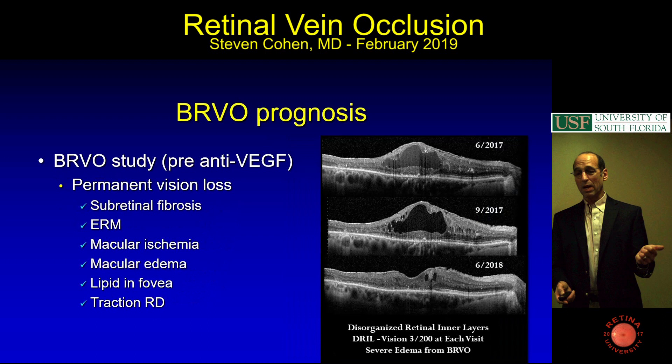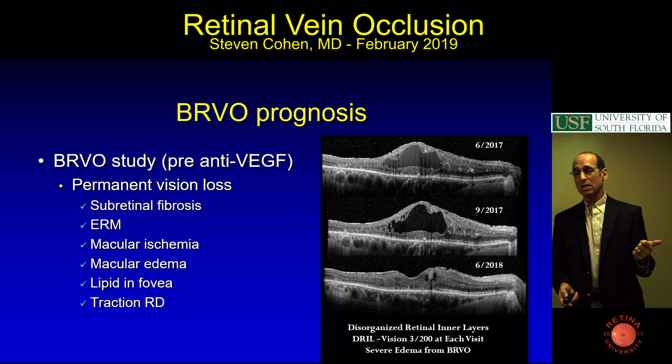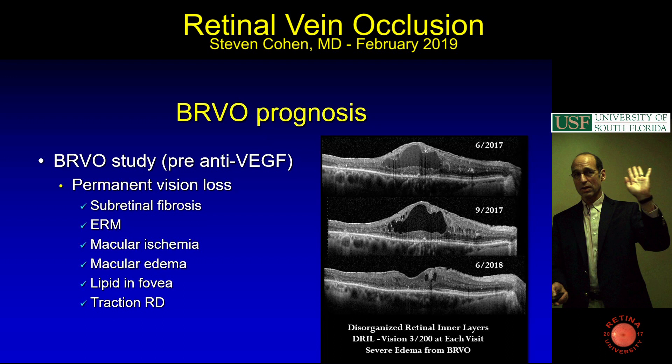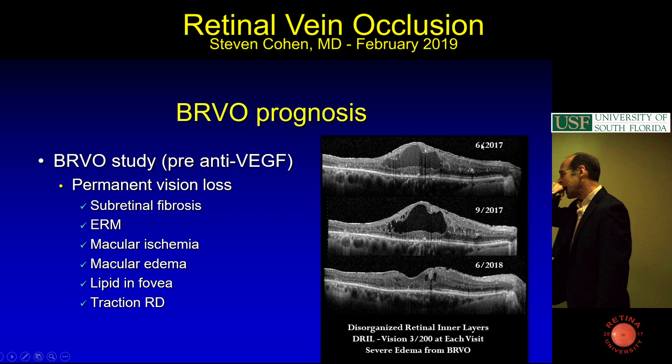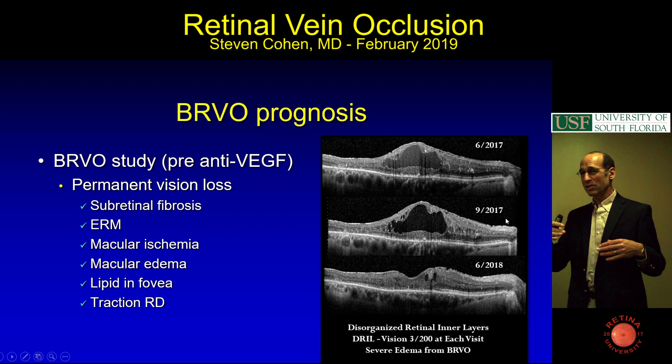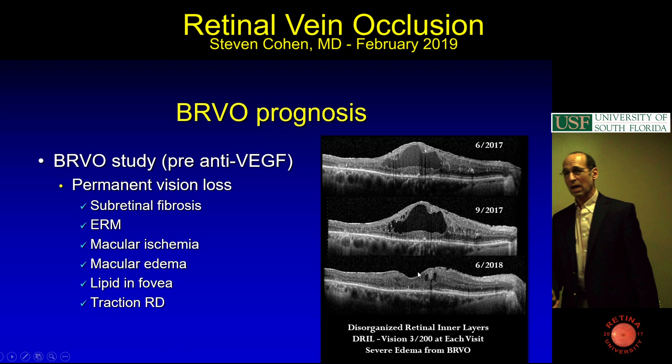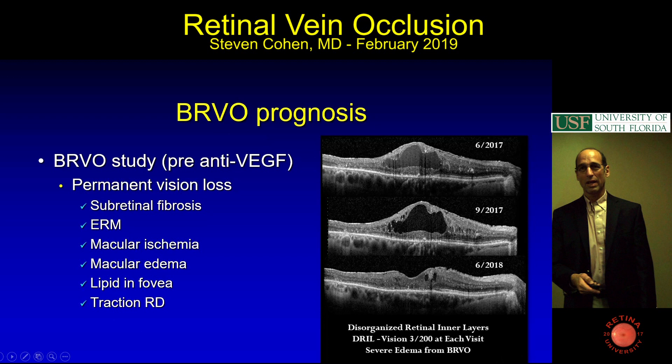Edema can cause vision loss—that's why we like to suppress edema. Lipid in the fovea is bad, and then tractional retinal detachment. Here's a patient who came in June 2017 with 3/200 vision, really bad edema, and a disrupted retina from vein occlusion. We dried it out and her vision got no better—that's the entity DRIL: Disorganization of the Retinal Inner Layers. Even though there's no macular edema and the outer retina looks decent, really bad edema can cause permanent vision loss.